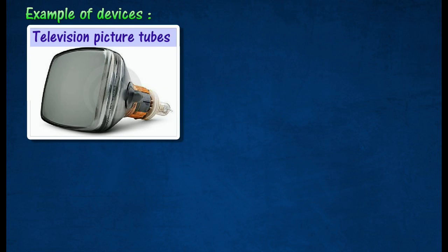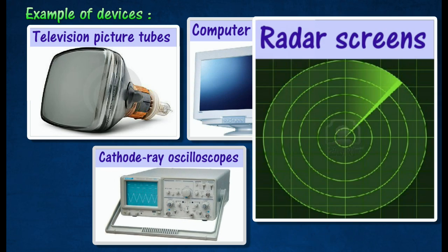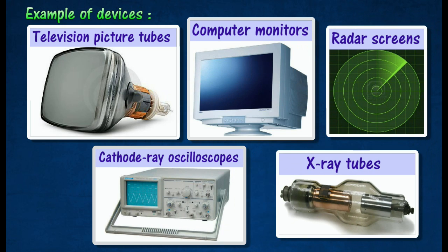Devices based on this principle of operation of cathode rays include television picture tubes, computer monitors, cathode ray oscilloscopes, radar screens, and X-ray tubes.